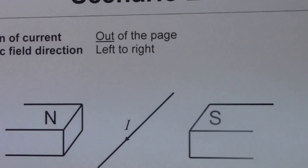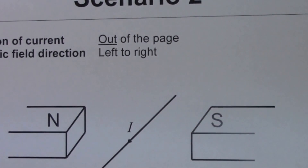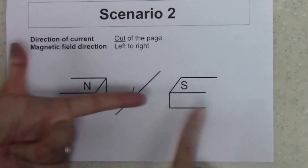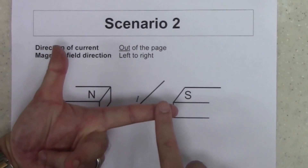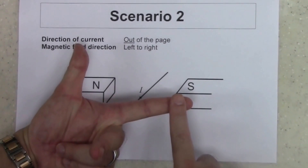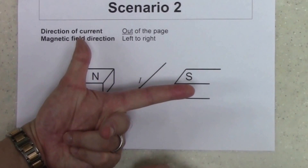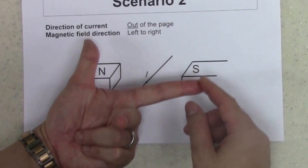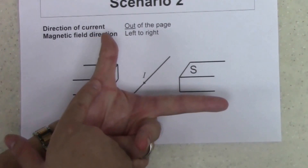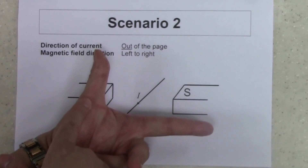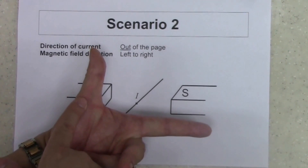In scenario two, the direction of the current is out of the page, and the magnetic field line is still from the left to the right. Align the index finger pointing from left to right for the magnetic field, then align the middle finger pointing out of the page for the current. The thumb is now pointing upwards, meaning the wire will move upward. The direction of the force is upward.